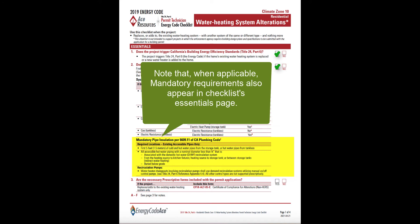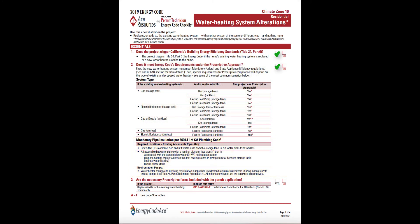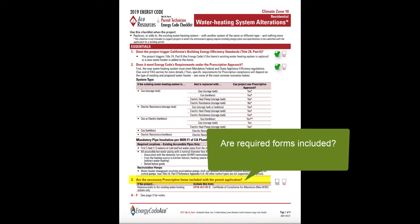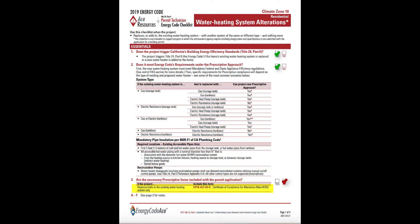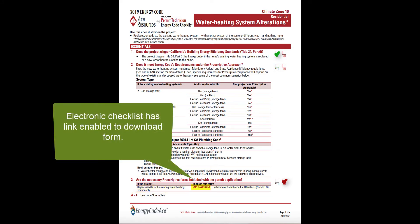Let's say the homeowner selected a compliant heat pump water heater and the project meets all mandatory and prescriptive requirements on the page 1 summary. The final question to ask in evaluating the permit application is whether all required energy compliance forms were submitted. Part 3 of the checklist page can help with this. Let's say the homeowner didn't submit any energy code forms — what's missing? In this case, replacement of a water heater requires submission of compliance form CF1R-Alt-05E.